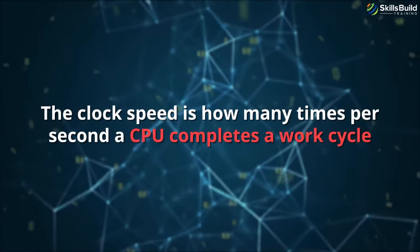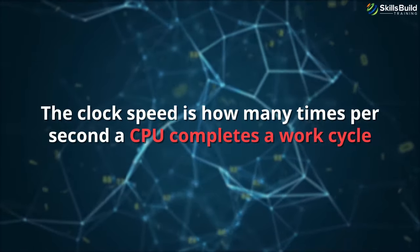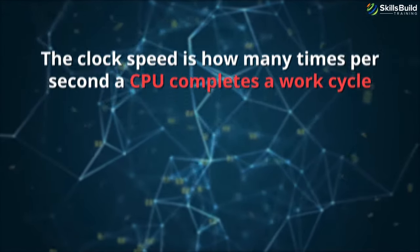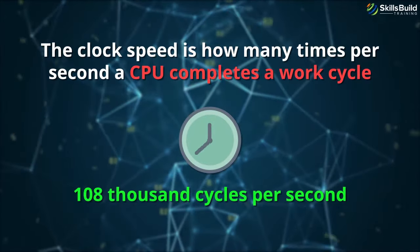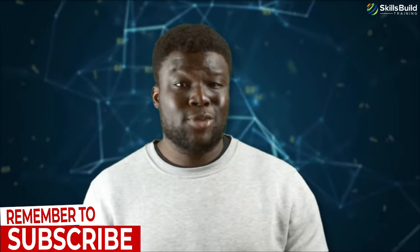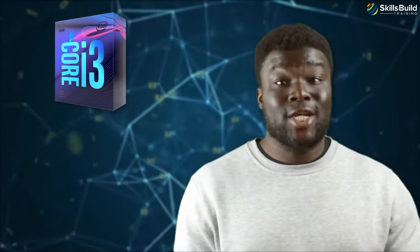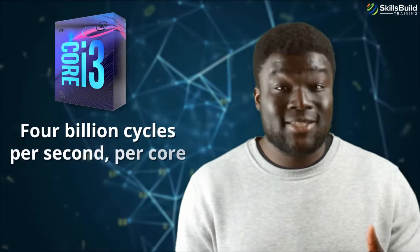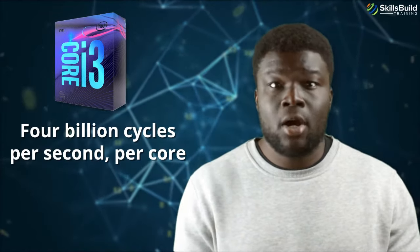The clock speed is how many times per second a CPU completes a work cycle. In this case, we're talking of 108,000 cycles per second. Of course, these specs aren't that great if we think of modern CPUs. By comparison, a cheap Intel i3-9100F can complete more than 4 billion cycles per second per core.